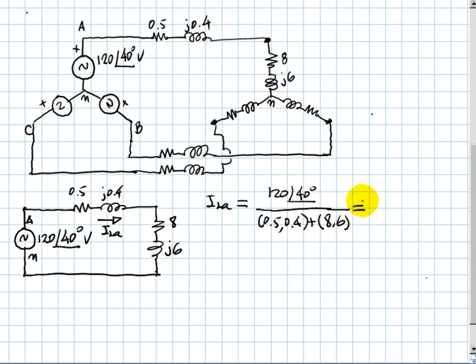We do the computation and we get that line current 18.3 amps with 3.02 degrees. That is for phase A. But the question was...